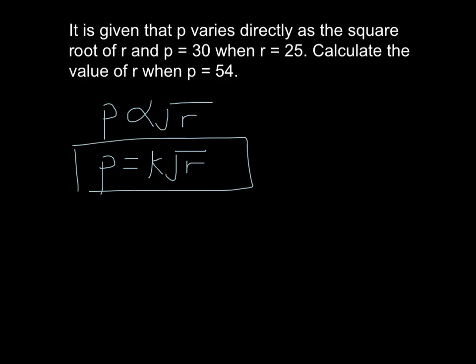Then what's next is, over here he gives you the value for P and R. You just substitute the value into this equation. So you got 30 will equal to K, we do not know, we have to find K. And then we know R actually equals to 25. So you just solve this one. Square root of 25 is very easy, it will give you 5. So 30 will equal to 5K. So K will equal to 30 divided by 5, which is 6.